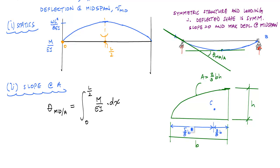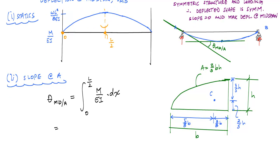And then in the vertical, if we needed that, this distance is 2/5ths h and this distance is 3/5ths. So now all I'm doing right now is just calculating this right here. And that area is equal to 2/3rds times the base, which is L over 2, times the height, which is WL squared over 8 EI. And this gives me WL cubed over 24 EI.